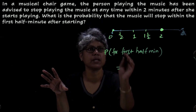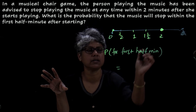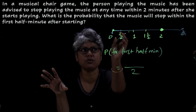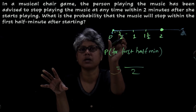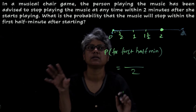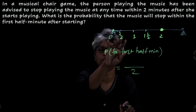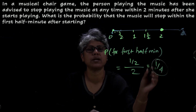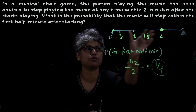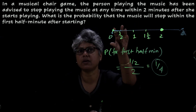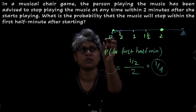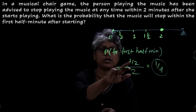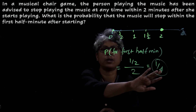Toh woh kaisi define karenge? That is equal to: yahan pe total kitna hai — 0 to 2 minute hai, so total humara rahega 2 minutes. Aur probability of first half minute — 0 to half minute ki beech mein woh kabhi bhi stop ho sakti hai, to uski jo banegi, that event — chair can be stopped within the first half minute — that will be half minute. So this is simple: that will be equal to 1 by 4. Uski probability banegi 1 by 4. Number of favorable event is 0 to half, so yahan pe humne half liya, total humne liya 2 minutes, that is equal to 1 by 4.